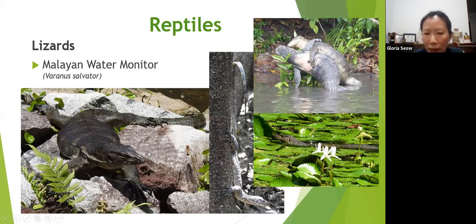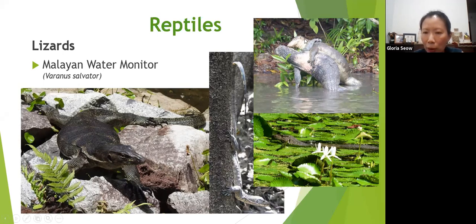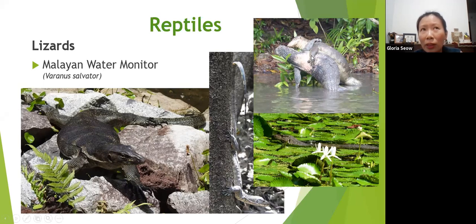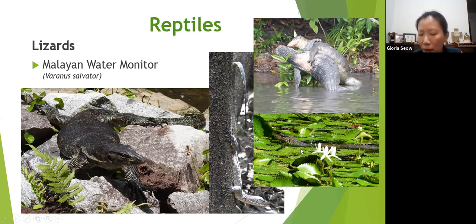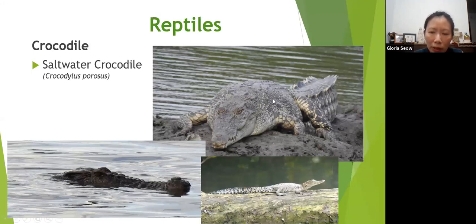The Malayan water monitor is the second largest lizard in the world after the Komodo dragon and can be about two metres long. Young monitor lizards are able to climb trees but adults are a bit too heavy for that. I photographed a pair of adults actually wrestling with each other — two males wrestling for territory. Quite amusingly, there were about four or five other monitors around them as an excited audience, seemingly egging them on. These monitor lizards can obviously swim and eat fishes — I've seen them eating giant toman.